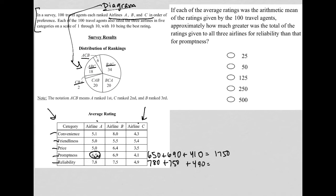And then for reliability, I have 780 plus 750 plus 490, and I get 2,020. So for reliability, let's do that, 2,020 minus 1,750. If I'm trying to figure out how much more there is for reliability than for promptness,